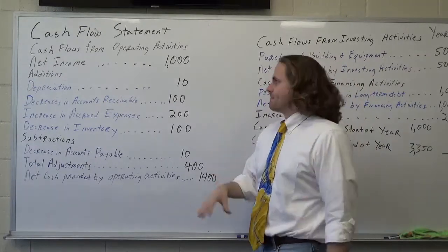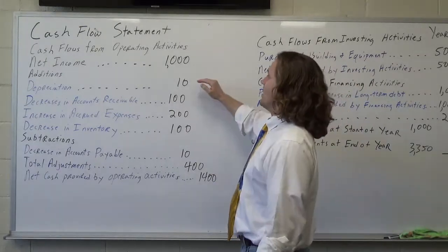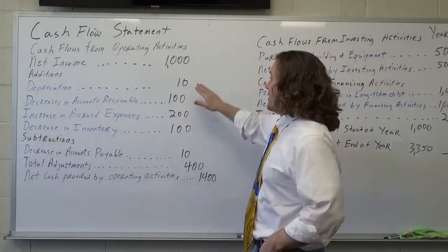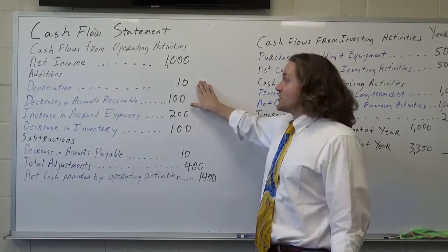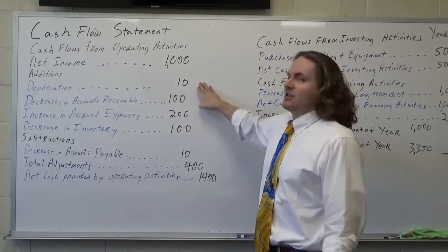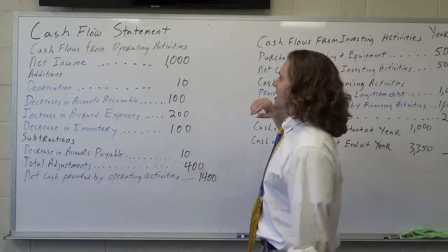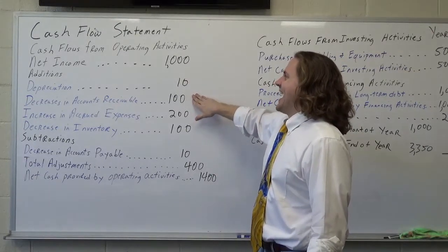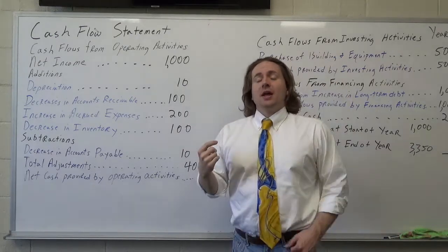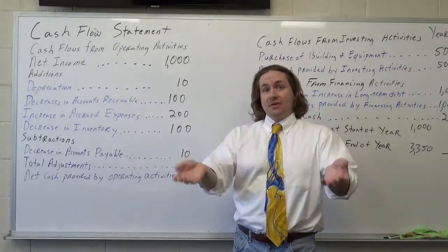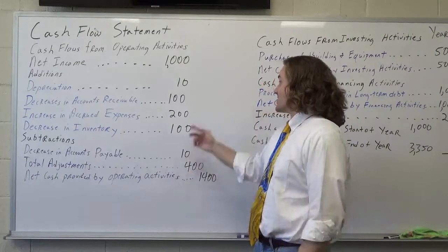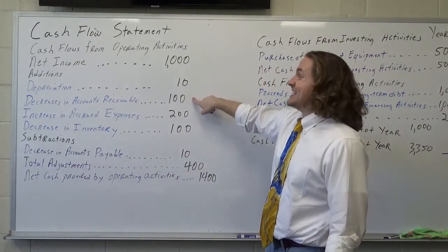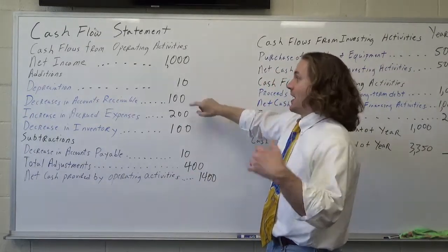We're going to make some additions to it. Depreciation — I've already talked about that in the simple cash flow statement in the previous video — so we're going to add ten dollars for depreciation. Decreases in accounts receivable: I had accounts receivables, I invoiced people, and they paid those invoices, so that adds a hundred dollars. That's why it's a decrease in accounts receivable — because the money's been paid.